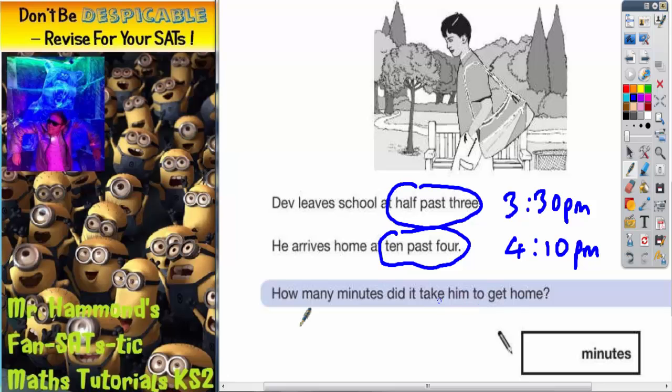So we'll do a similar thing again. So this time he's starting at school and he's going home. So he's leaving school at 3:30pm, and he's arriving home at 10 past 4.